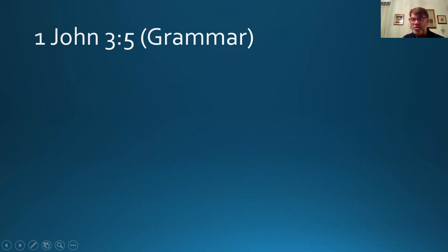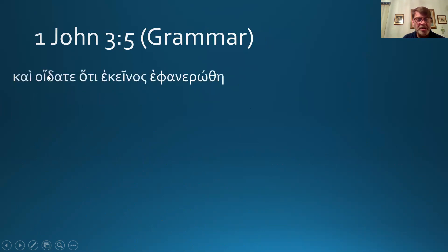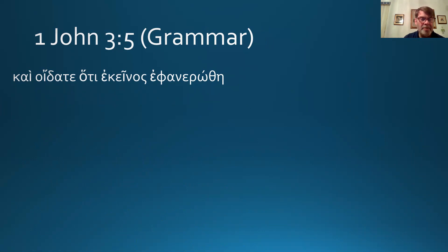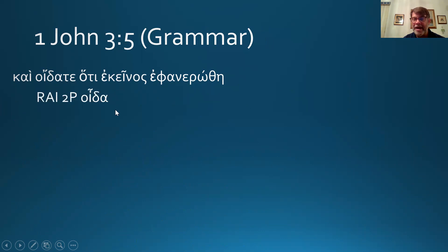Pretty easy translation. Grammar stuff: oida is perfect in form but present in meaning. And it's second person plural, indicative. So: perfect active indicative in form, second plural, from oida — and oida you know.